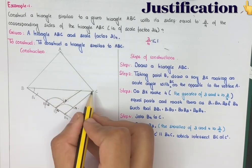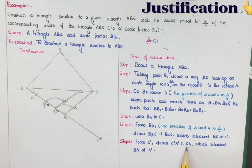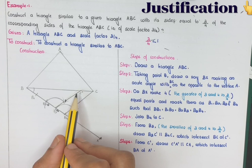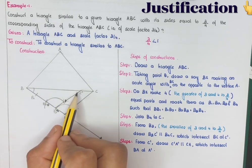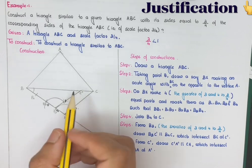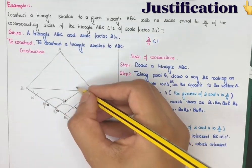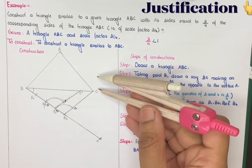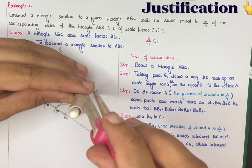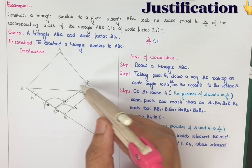This gives the intersection point C' on BC. Step 6 — from C', draw C'A' parallel to CA, which intersects BA at A'. Mark point C'. We now need to construct side BC' of the similar triangle. To draw C'A' parallel to CA, place the compass pin at point A and draw an arc cutting the relevant lines.